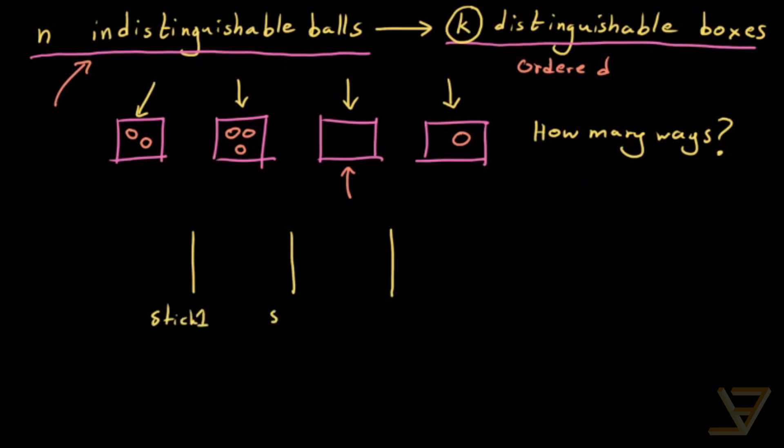Stick one, stick two, stick three, and that results in a bunch of sections. We have box one here, box two here, box three here, and box four here. You can see that K minus one sticks leaves you with K sections, which we treat as the boxes.